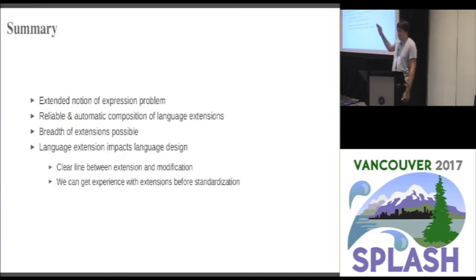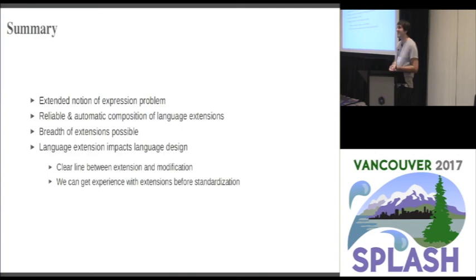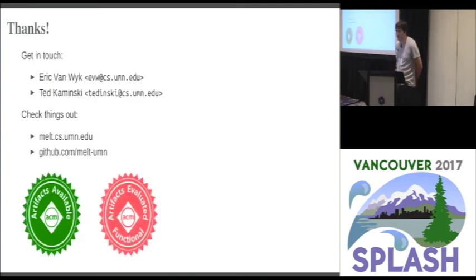To summarize: we have an extended notion of the expression problem that we think is what's needed for making language extension practical. We have a system for reliably composing language extensions and a breadth of extensions that are possible to build. As a concluding observation, a language extension system like this has an interesting impact on language design: we have a clear picture of what can be implemented as an extension versus what constitutes a genuine language change. This can help focus attention when designing languages, and if we can implement things as extensions first, we can gain experience before finalizing designs and putting them in standards. We do have an artifact — very easy to clone and 'vagrant up' a VM to play around with it.